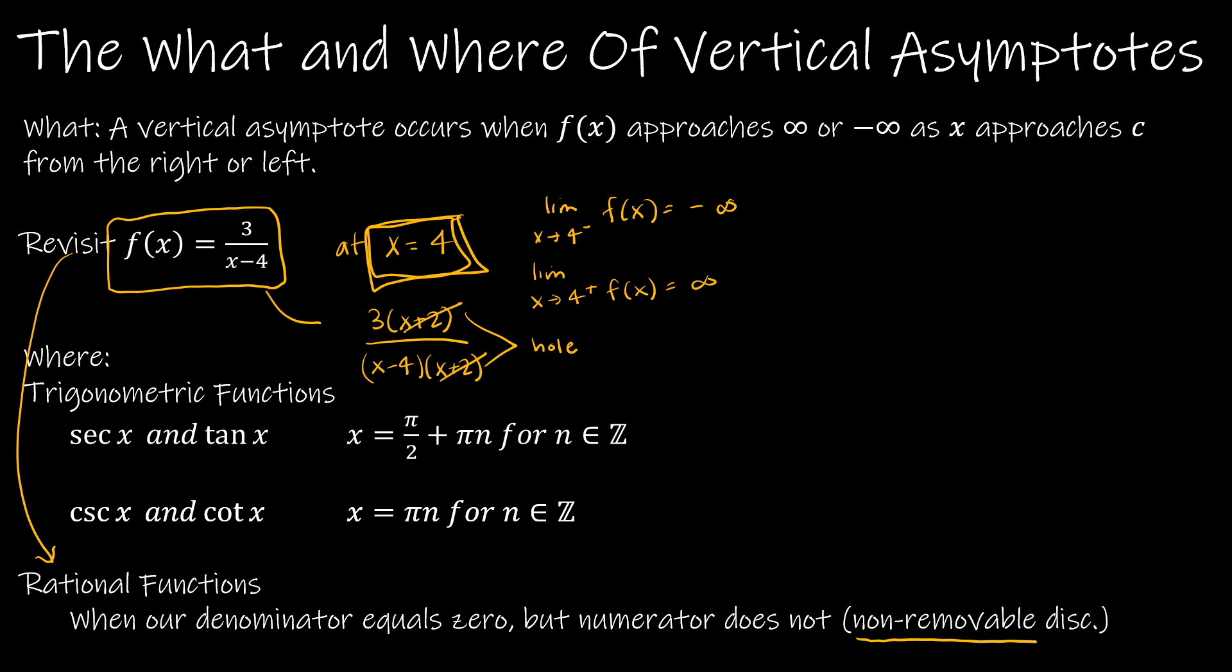And then for trig functions, this is just something that you need to commit to memory. Secant function and the tangent function of x both occur when x is equal to π/2 plus πn for any integer n. So essentially at intervals of π, but at the π/2. So that would be π/2, 3π/2, 5π/2, negative π/2, negative 3π/2, and so on. But for cosecant and cotangent, we're just at π times n. So intervals of π at π.